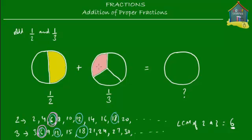So to add half and one third, we first cut both pizzas into six slices. The yellow part, which was originally one slice out of two, is now made up of three slices when the pizza is cut into six. So half is equal to three slices out of six slices.